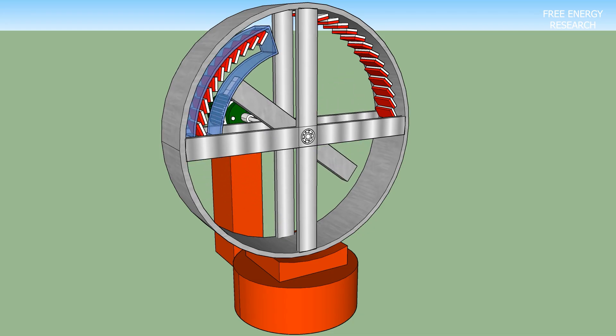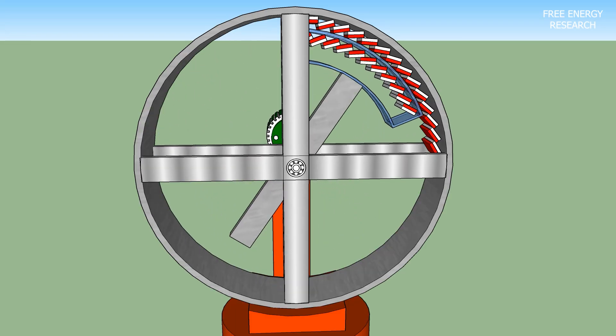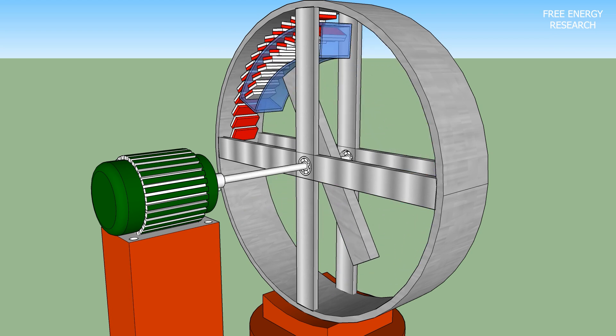As the arm encounters shifts in gravitational forces and the onset of friction, a potential slowdown in rotation is anticipated. However, this is precisely where the magic happens.